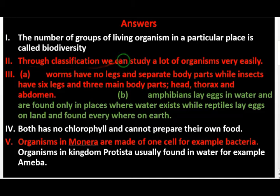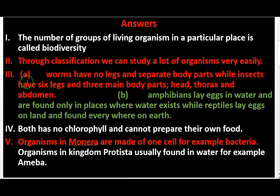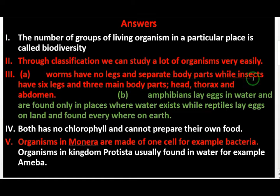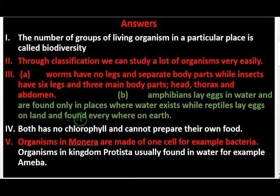Through classification we can study a lot of organisms very easily. Worms have no legs and no separate body parts. Insects have six legs and three main body parts: head, thorax, and abdomen. Amphibians lay eggs in water and are found only in places where water exists, while reptiles lay eggs on land and are found everywhere on earth.